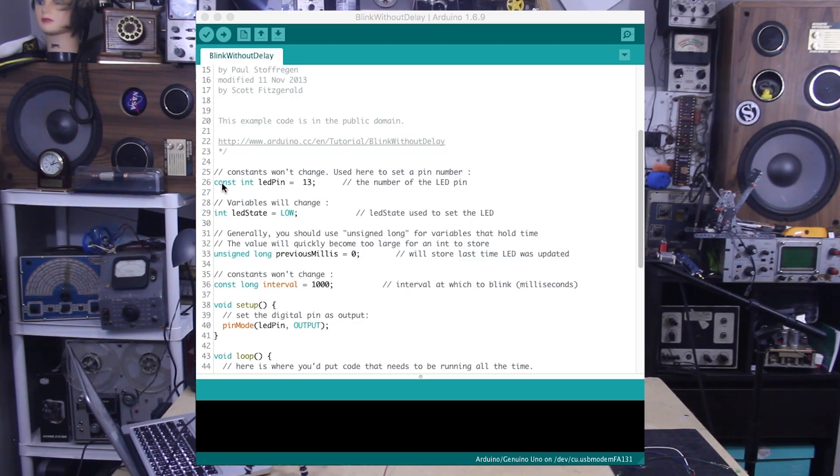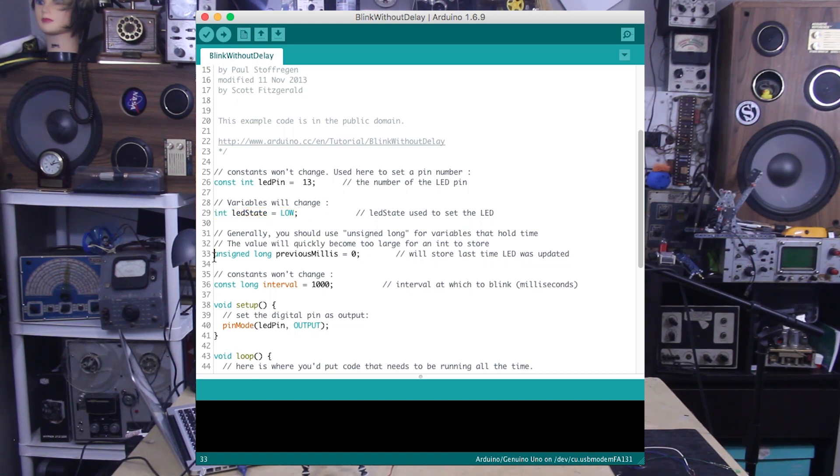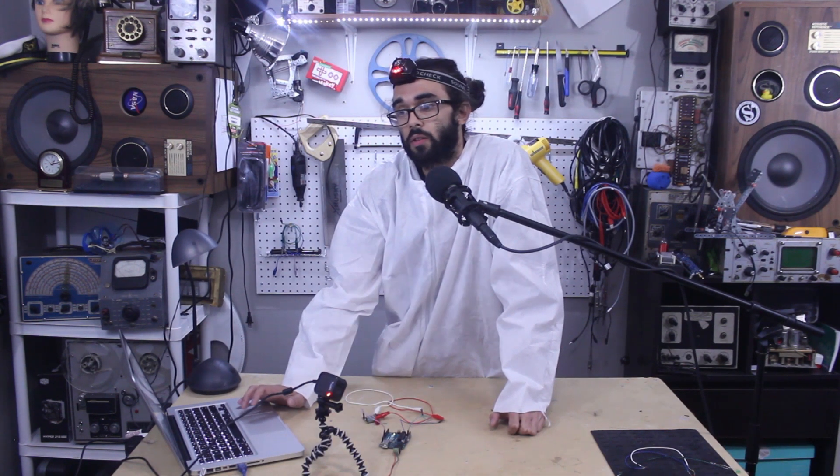First declare your pins and variables as usual. We're using pin 13 as our LED pin. Assign the LED state integer as low or off—this is just its initial state. Then declare a variable previous millis of type unsigned long. Unsigned longs are 32-bit variables used for variables whose values can become very large. Previous millis will be used to store the last time the LED was updated.